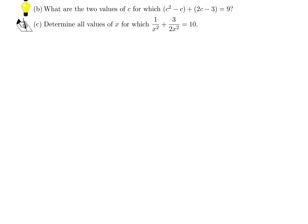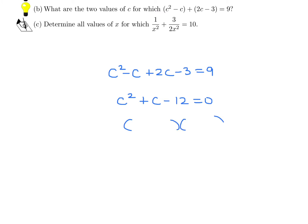What are the two values of C for which C squared minus C plus 2C minus 3 equals 9? That means C squared plus C minus 12 equals 0. This factors as (C+4)(C-3), so C is either 3 or negative 4.